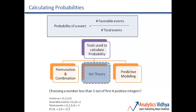Coming to set theory — here is a question: choosing a number less than three out of the first four positive integers. The universe is {1, 2, 3, 4}. The favorable events are 1 and 2, which are two in number. Total events are four. Therefore, the probability of choosing a number less than three is two by four, which equals one by two.